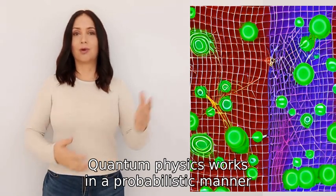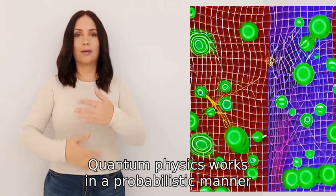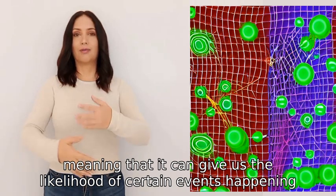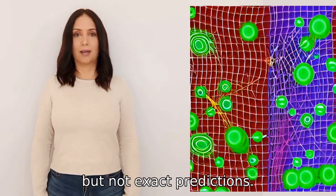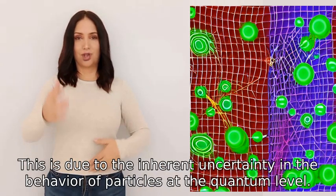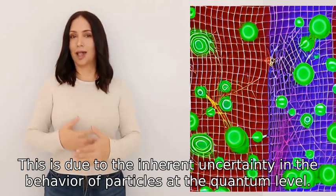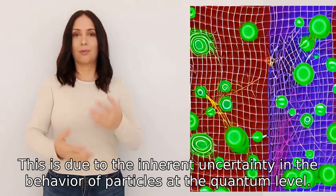Quantum physics works in a probabilistic manner, meaning that it can give us the likelihood of certain events happening but not exact predictions. This is due to the inherent uncertainty in the behavior of particles at the quantum level.